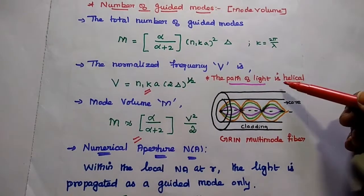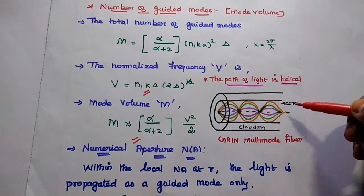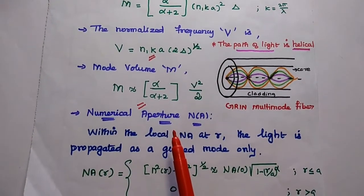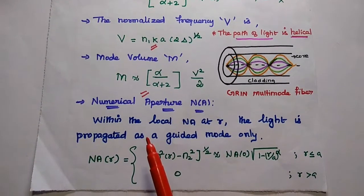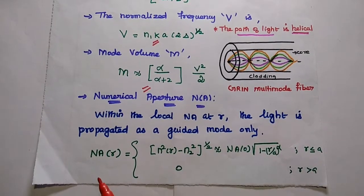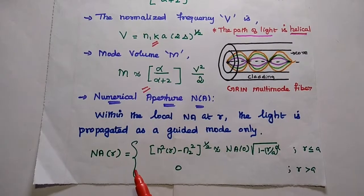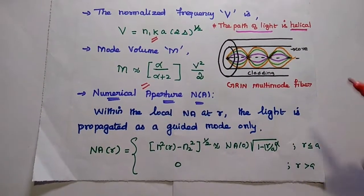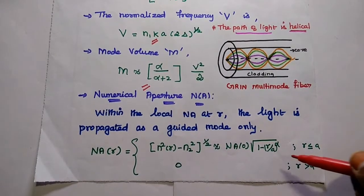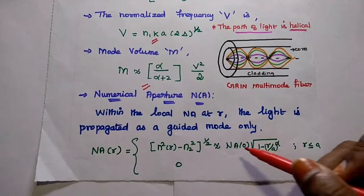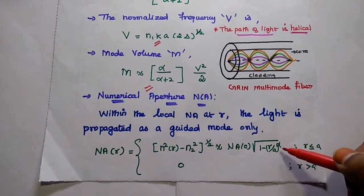The path of light in graded index fiber is helical in nature. The numerical aperture value for graded index fiber can also vary based on the graded index profile, so it is represented as numerical aperture as a function of radial distance. Within the core, its value is approximately NA(0) · sqrt(1 minus (r/A)^alpha).